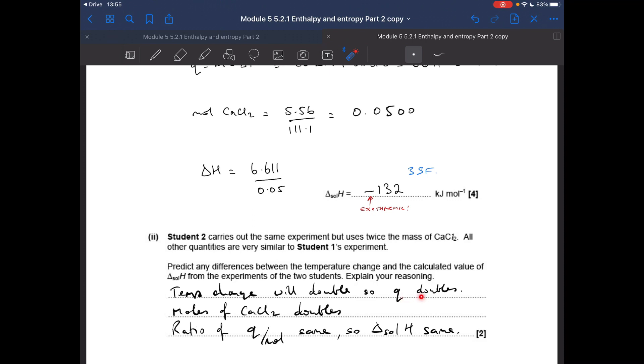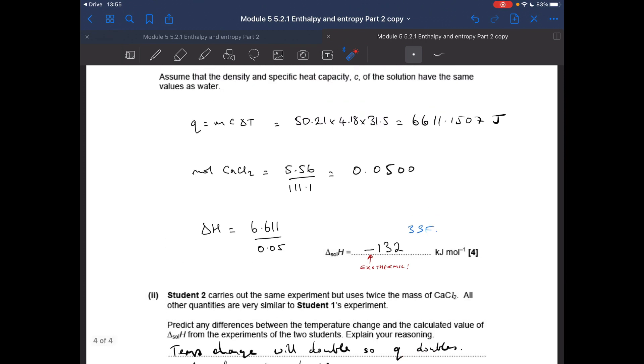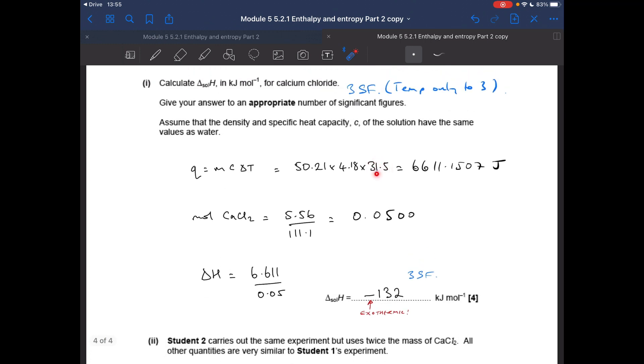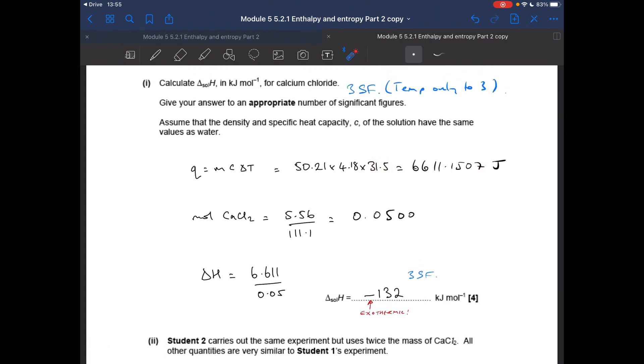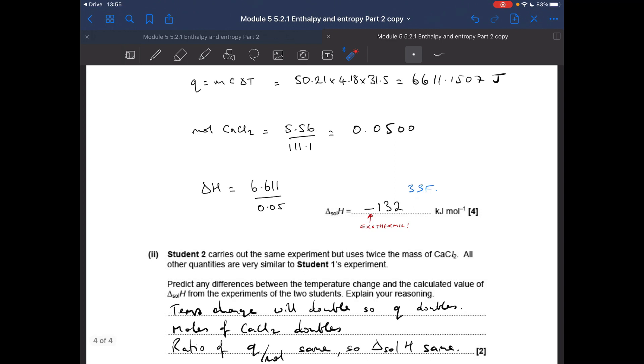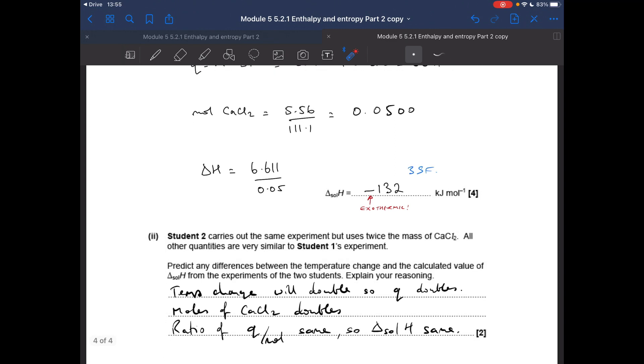So obviously if you've got twice the number there, that value will double. However, because they've used double the mass of CaCl2, the moles will double as well. So when you do the Q, that's two times bigger, but that's two times bigger than the other student. The ratio is the same. So the enthalpy change of solution will be the same.